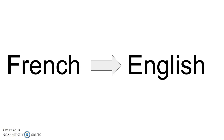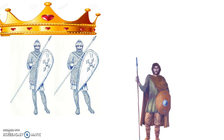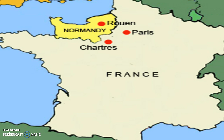A major component of the English language is derived from certain French dialects. This is due to the fact that England was ruled by the Norman French for roughly 300 years. The Norman French were the descendants of a group of Vikings and Norsemen who settled in the northernmost portion of France.